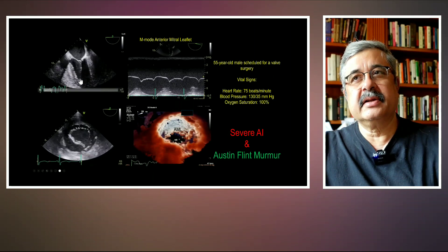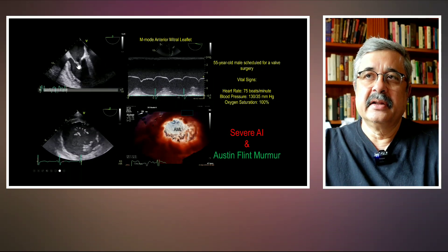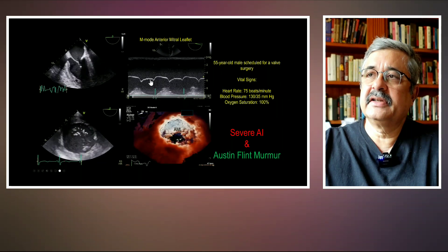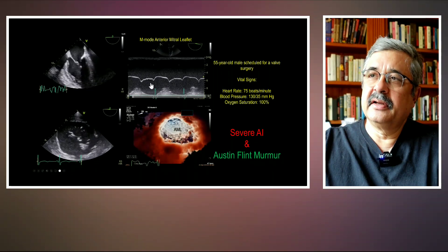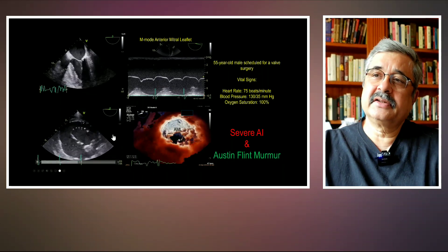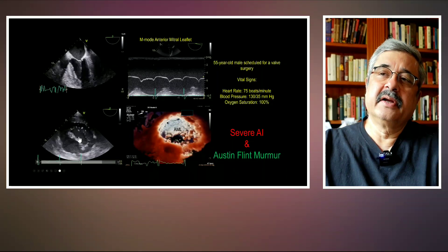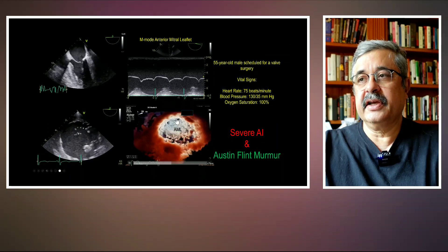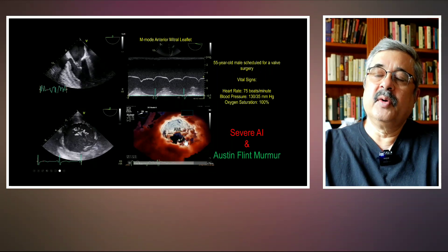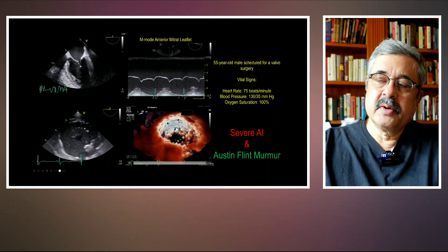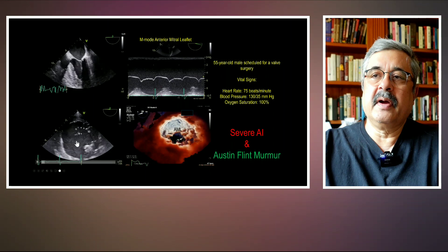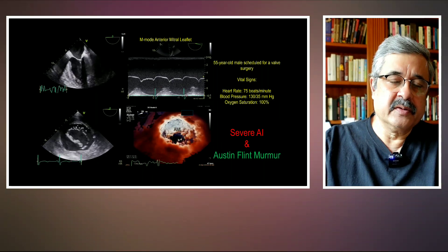In the mid-esophageal four-chamber view you can see the fluttering of the mitral valve in diastole, which can also be appreciated on the M-mode through the mitral valve. During the diastolic phase you can see this high-frequency fluttering, very well demonstrated in the basal transgastric short axis as well, showing the anterior mitral leaflet fluttering in diastole. The three-dimensional rendition shows the same thing more elegantly, illustrating the direction of the eccentric aortic regurgitation jet.